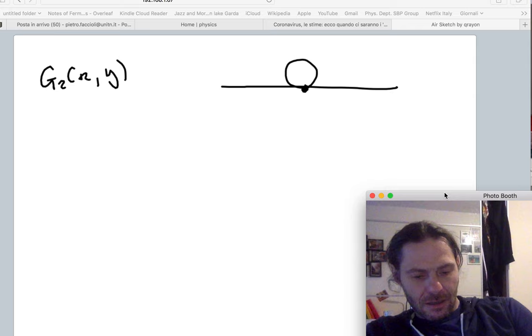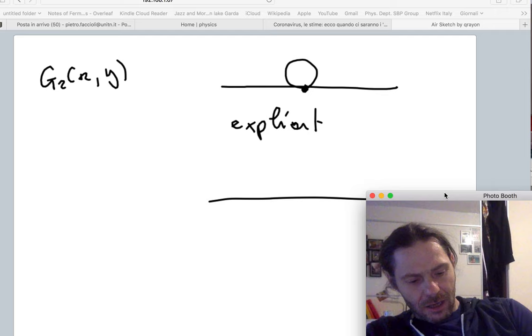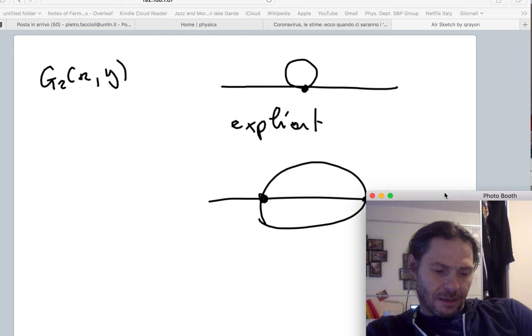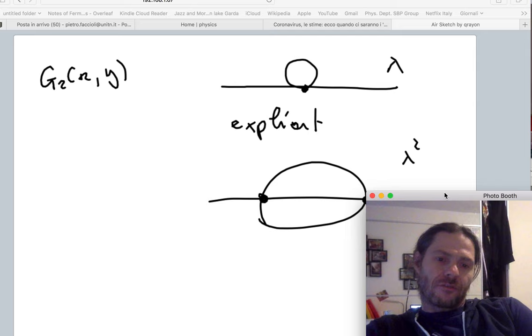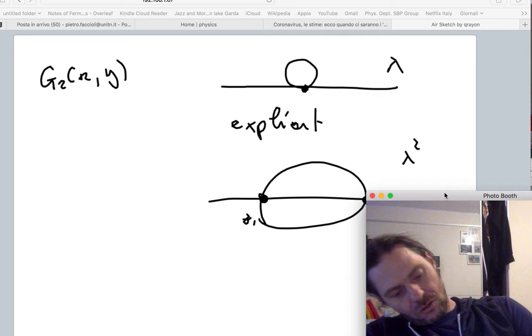So in order to practice and get handy with this, I suggest you calculate G₂(x,y). You calculate this diagram explicitly, introducing a cutoff, and you calculate this diagram explicitly.